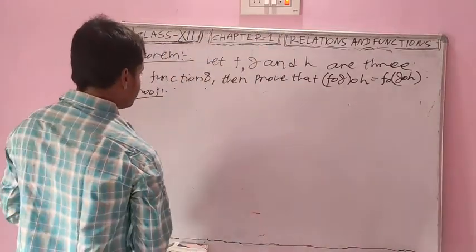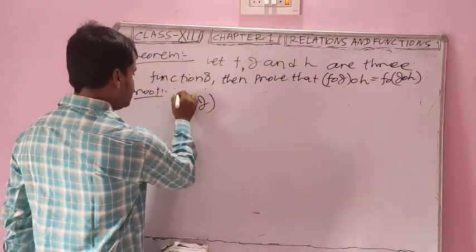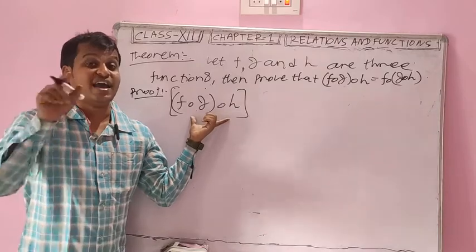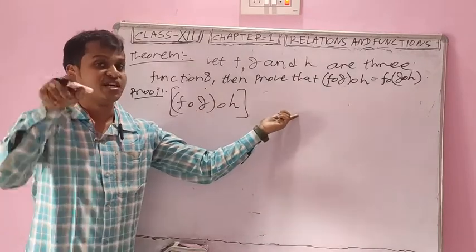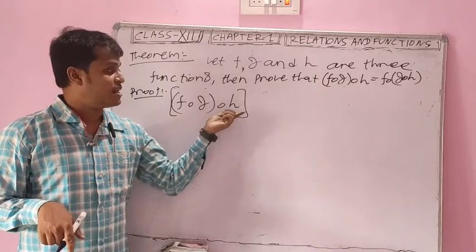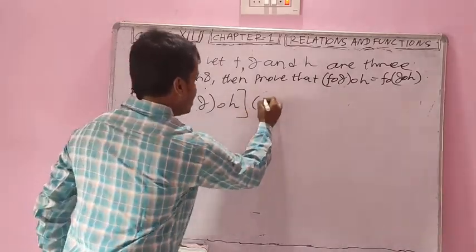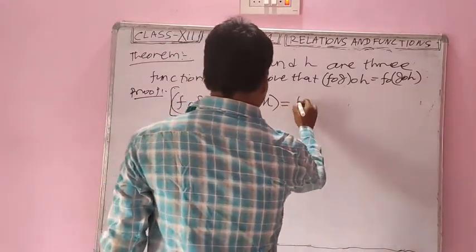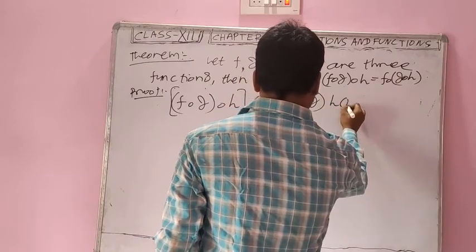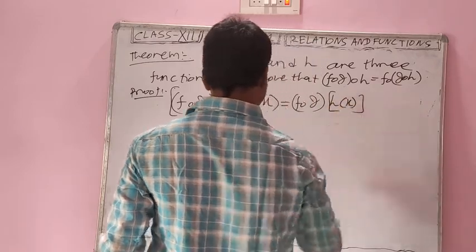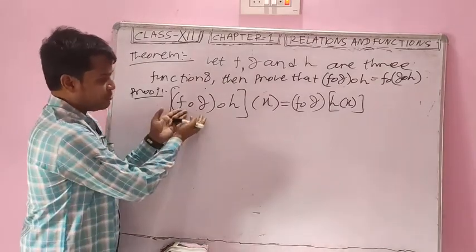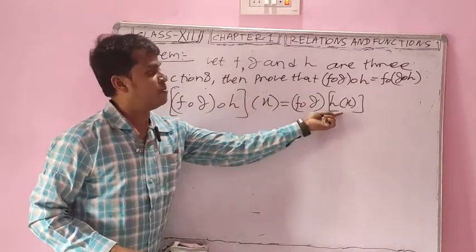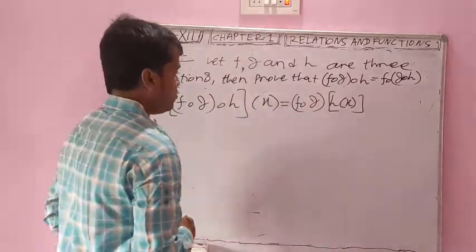Take the left-hand side: (f∘g)∘h. The domain is the set A and codomain is the set D. Find its value on every element of the domain. Suppose the domain element is x. By the definition of composition, (f∘g)∘h of x equals f∘g of h(x).